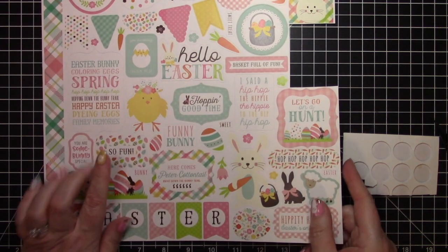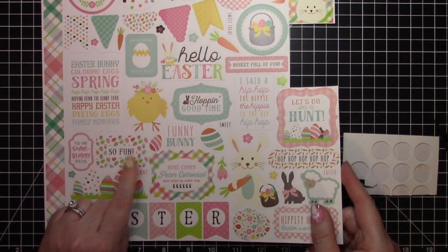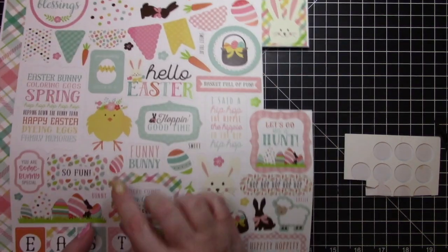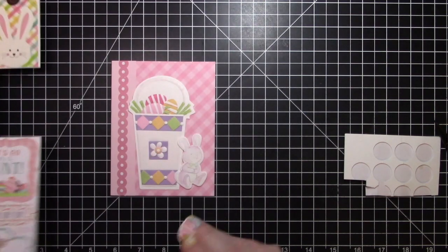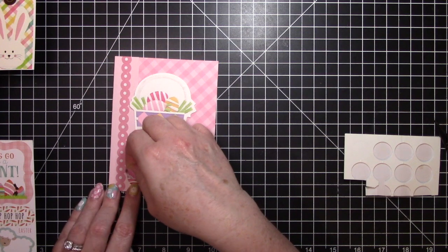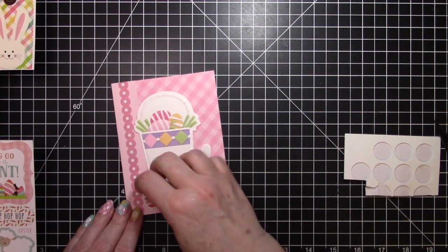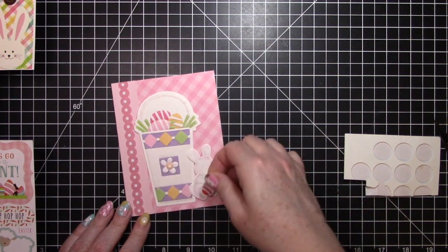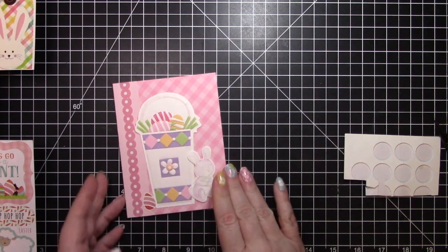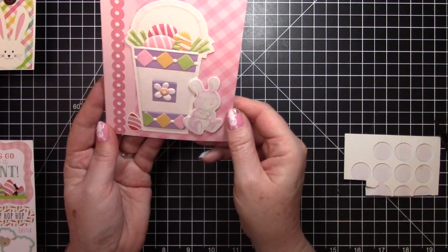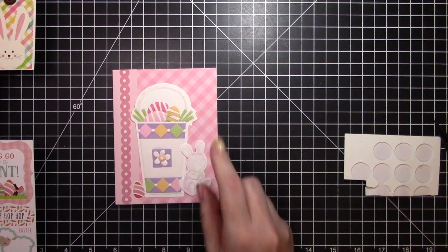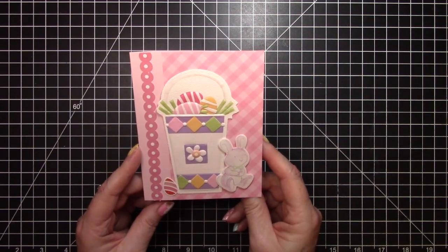And on this sticker page from Hello Easter from Echo Park, I have this little Easter egg that I thought sort of matched the Easter eggs that were in there. So I'm just going to set that down here at the bottom. Or maybe he should hold it. No, it's too big. I'll put that down there at the bottom as if it fell out of the Easter basket. All right, so that card is done. And let's go ahead and do the other card.